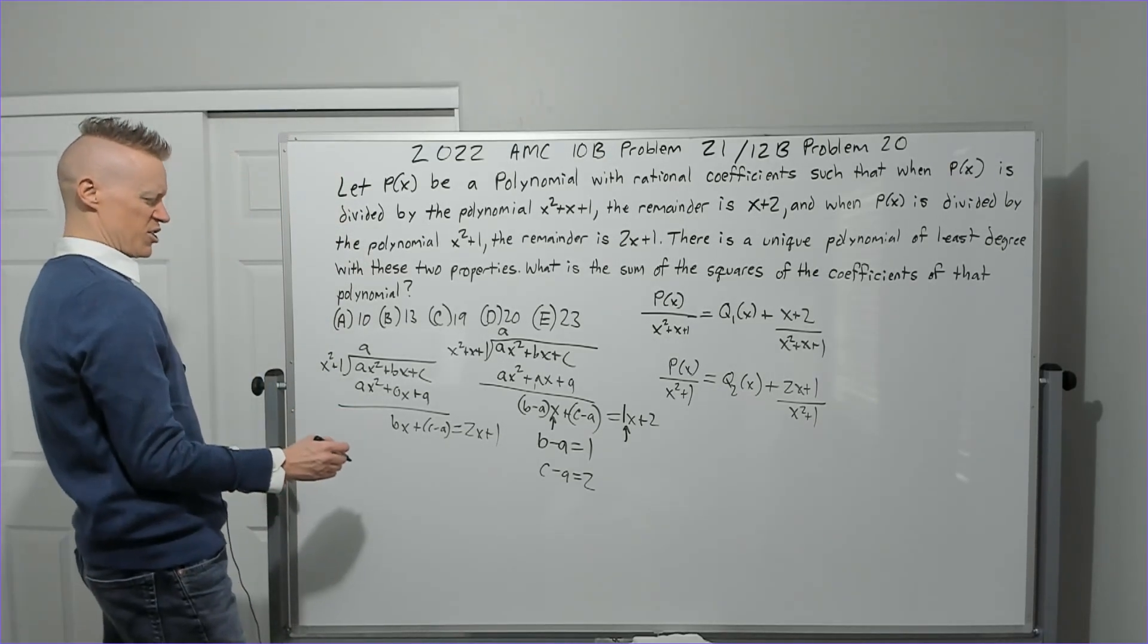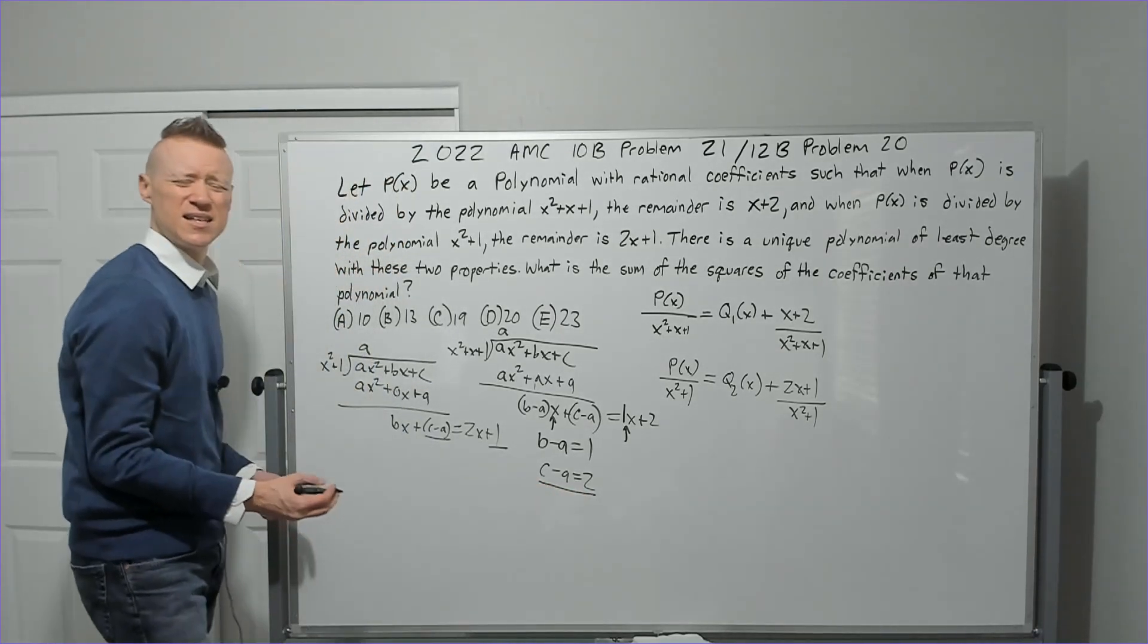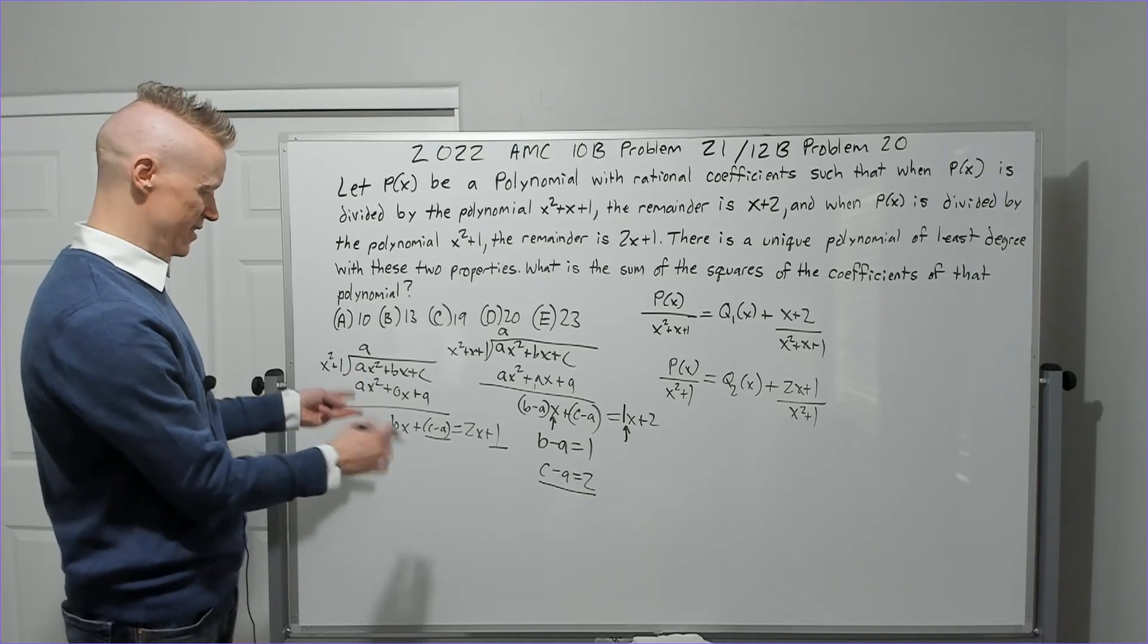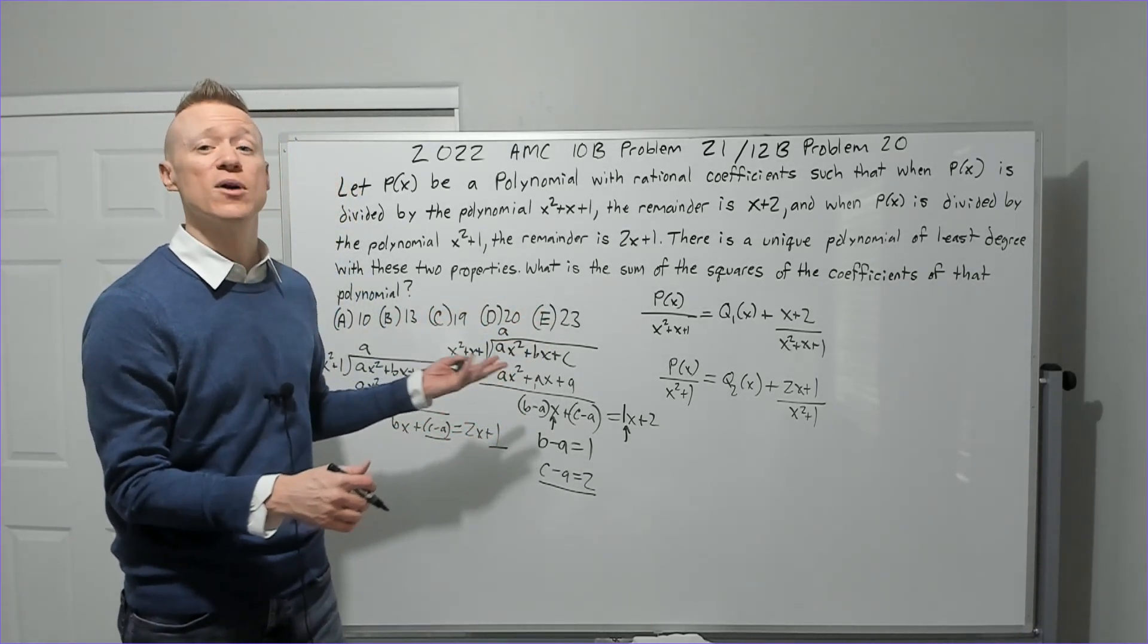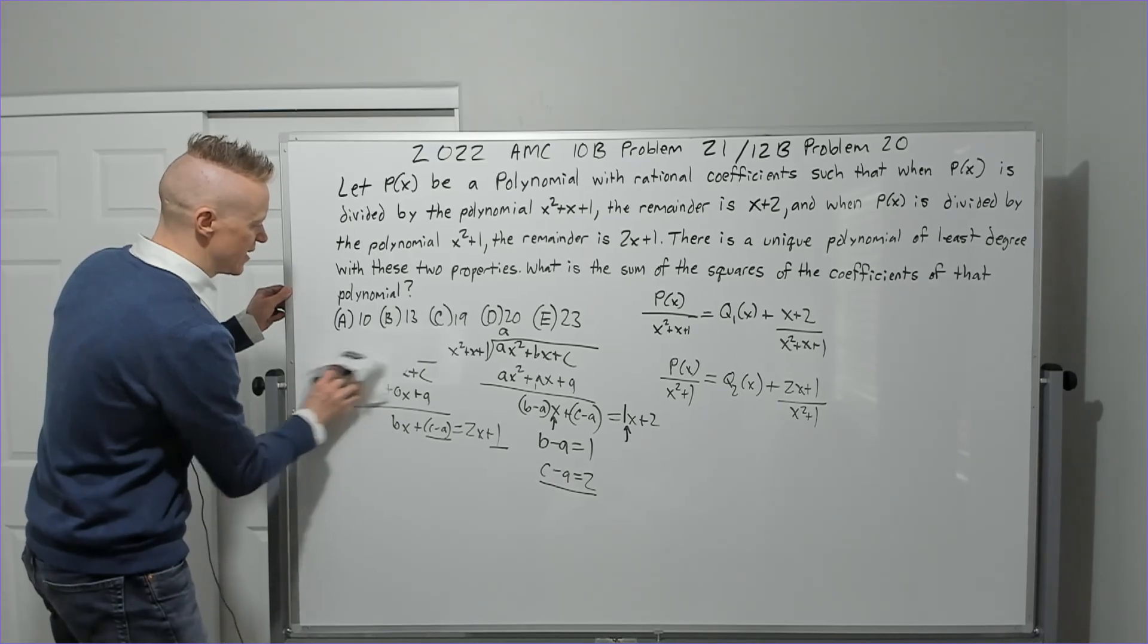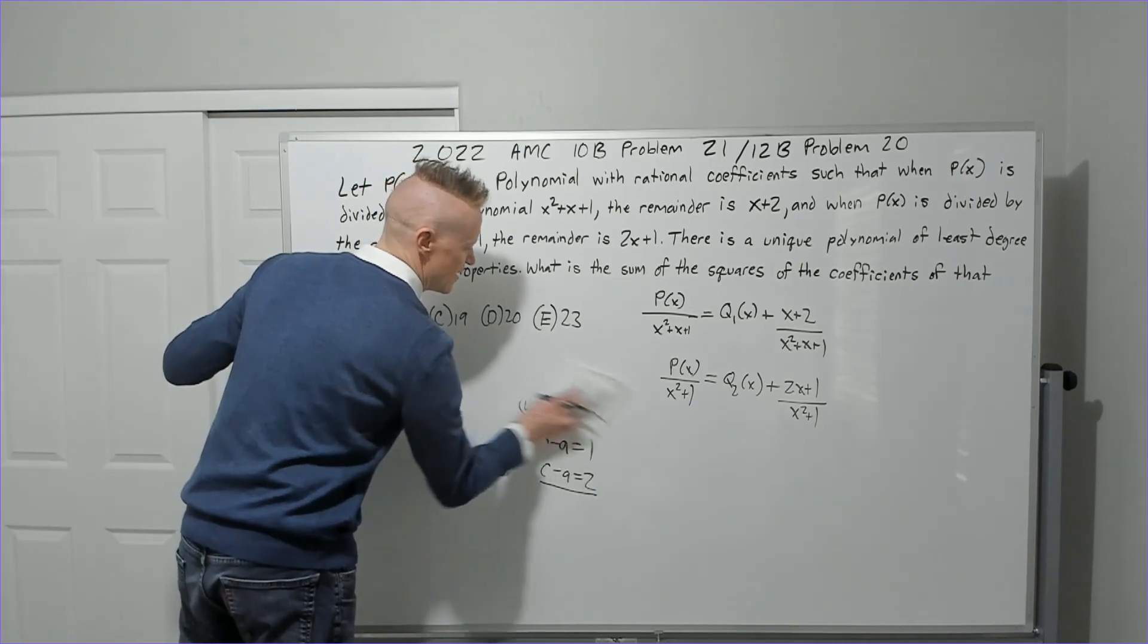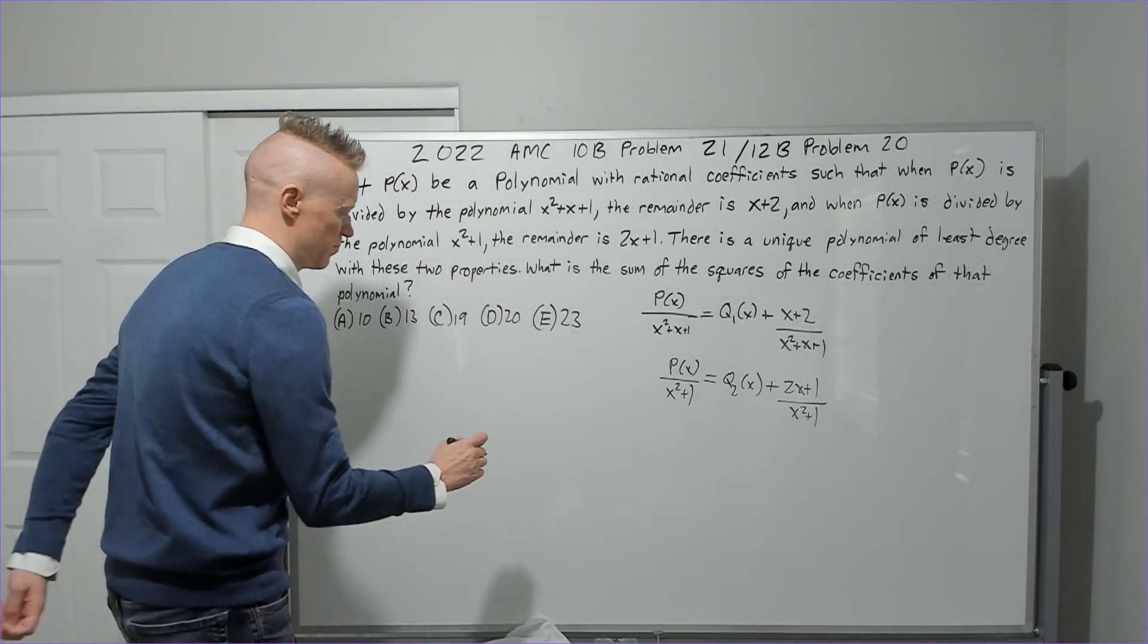This time, the remainder is 2x plus one. So the question I would have is c minus a is one, but here it says c minus a is two. That is a problem. That means this doesn't work with a quadratic polynomial. So what we're going to do now is we're going to actually erase this and make another attempt with a cubic polynomial, since that one does not bear fruit.